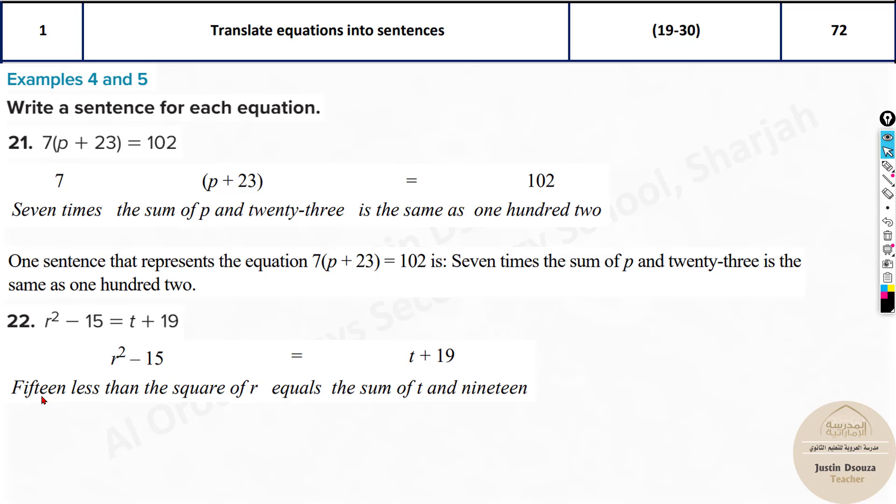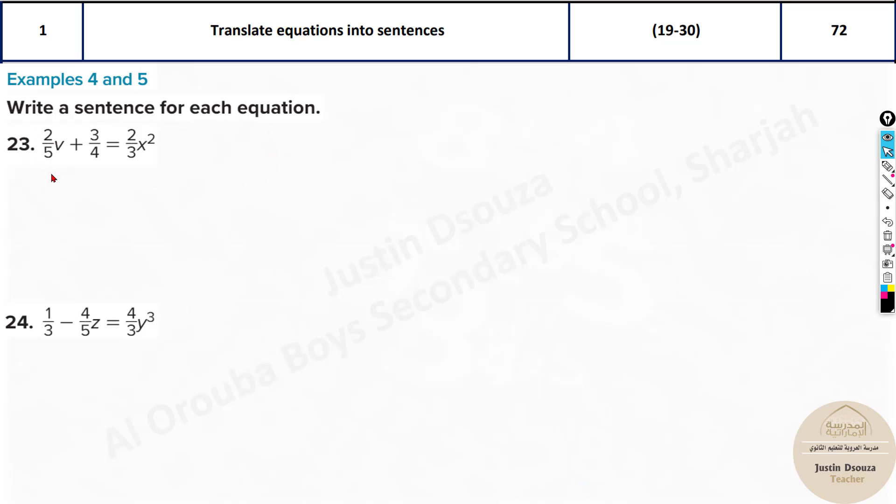Now since it's minus, you can tell if you're starting with r square, the square of r minus 15, or the square of r subtracted by 15. Subtracted is minus. Now here they are telling less than. In this case, you must tell 15 is less than r square, the square of r. When you're using less than, 15 is less than, minus means less than what? R square.